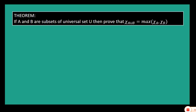Now we will see one theorem regarding this characteristic function. If A and B are subsets of universal set U, then prove that the characteristic function of A union B is equal to the maximum of the characteristic function of A and the characteristic function of B. To prove this theorem, if x belongs to A union B, then the characteristic function over A union B of x is equal to 1.